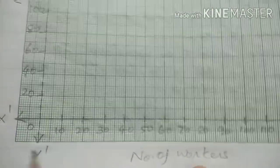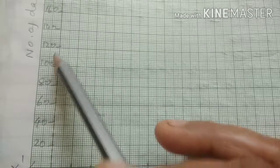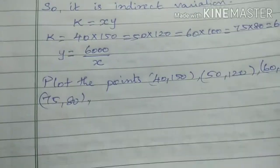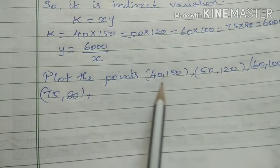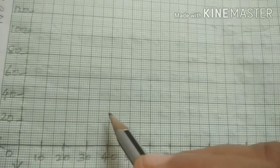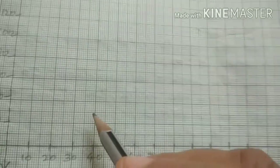Now we have x-axis and y-axis. The x-axis goes 10, 20, 30, 40 and the y-axis goes 20, 40, 60, 80. The x-axis represents the number of workers, and the y-axis represents the number of days. Now we plot: first point — x equals 40, y equals 150.